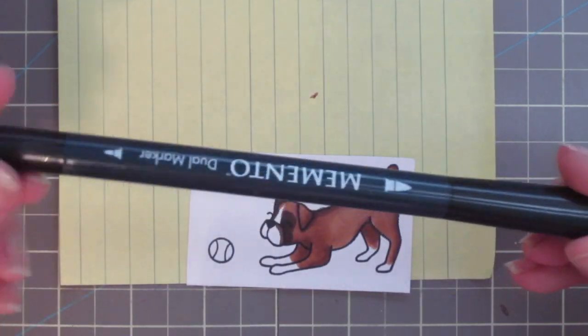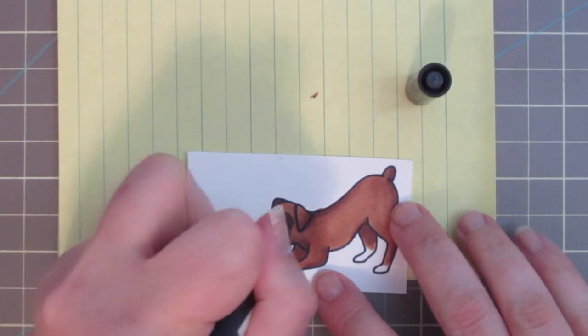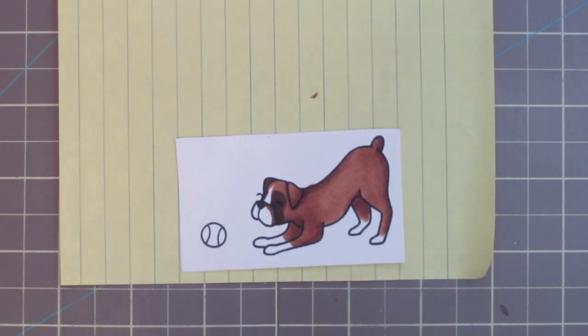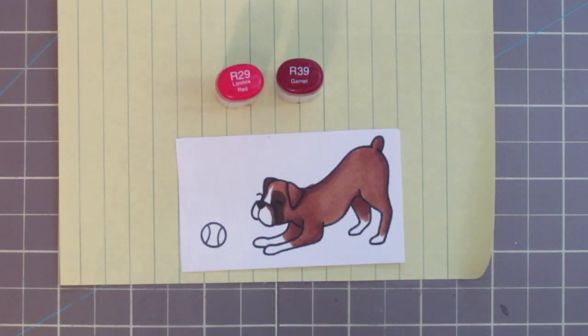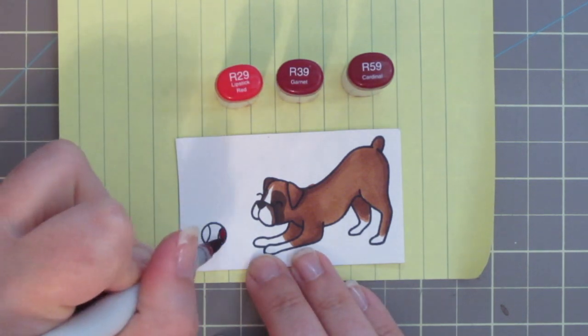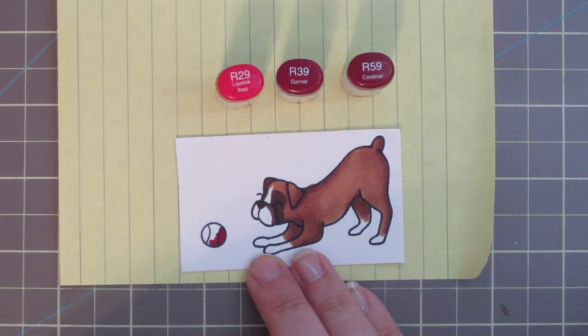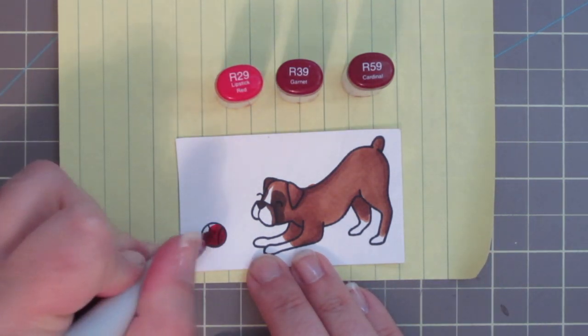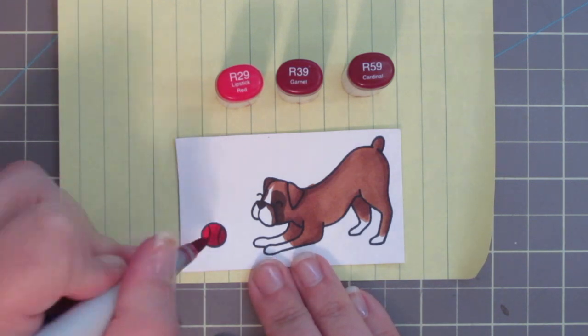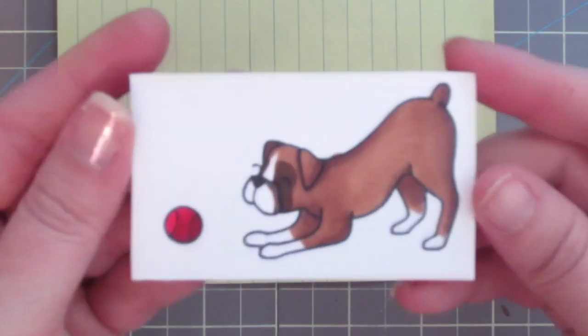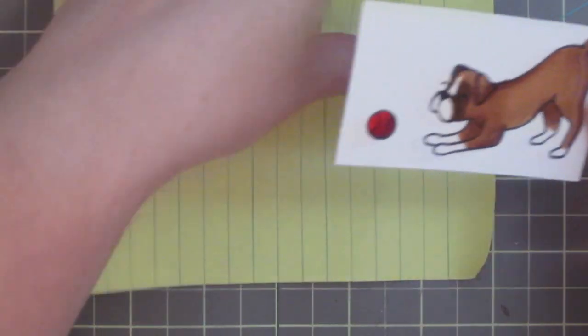Because I added that darker color his eye kind of got lost so I'm just going to take a black memento marker and just draw that right back in. I decided to go with a red tennis ball to add a nice pop of color to my little scene that I'll be creating and also to match the pattern paper that I'll be using. So I'm using my favorite red combo, which is R29, R39, and R59 and I'm just doing darkest to lightest since it's a super small quick little area. And there's a closer look at our little boxer. Super cute.